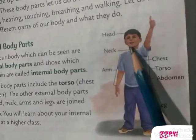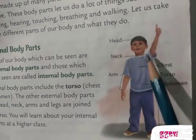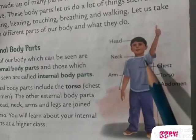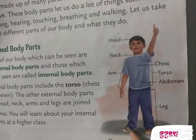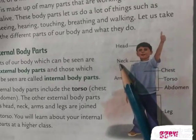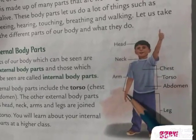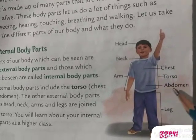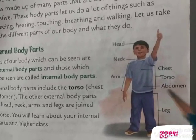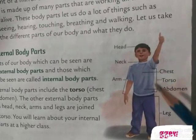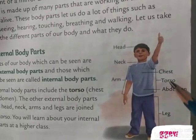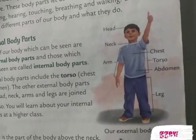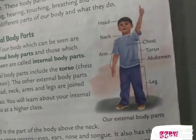This is a boy. This is the head of the boy, and this portion is called neck — the head is joined to the rest of our body by the neck. This is called our arm, this is called our chest, and this is called our abdomen. Together, from chest to abdomen, that part is called torso, and from here to here it is called leg. So these are our external body parts.